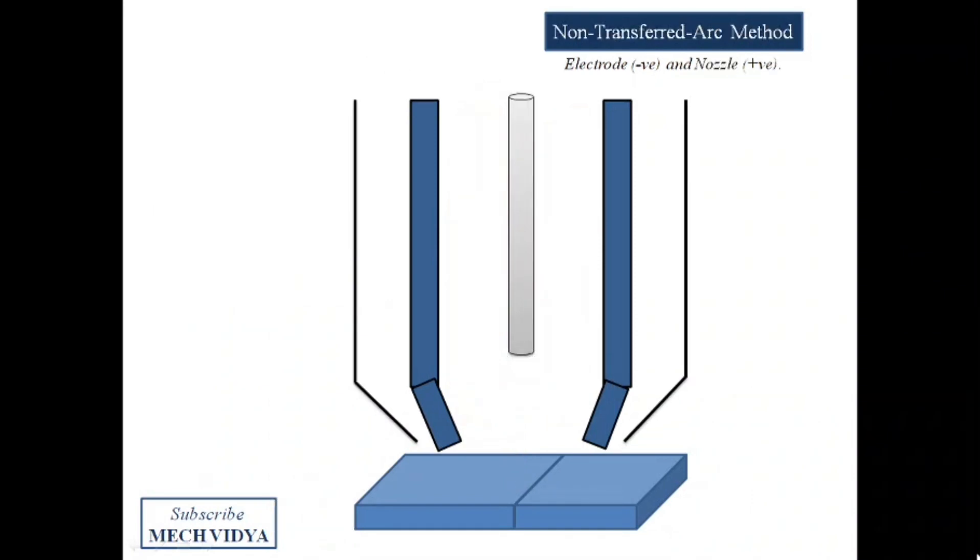In the second case, the electrode is connected to the negative terminal while the nozzle now is connected to the positive terminal. Thus, the arc now propagates from electrode to the nozzle.